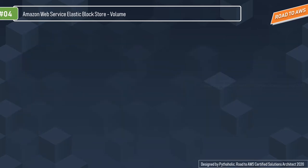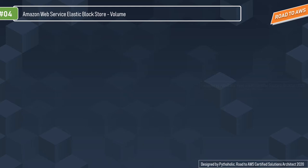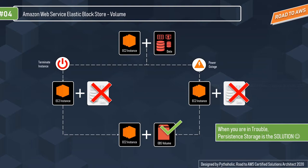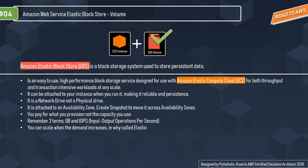Why was there a need for block storage in AWS? Imagine three EC2 instances with precious data — accidentally one gets terminated and another goes down due to a power outage. With no persistent storage, you lose all data. That's a hard pill to swallow. Persistent storage is the solution, and that's where AWS Elastic Block Store comes in. Even if you terminate an instance or suffer a power outage, you won't lose data with EBS.